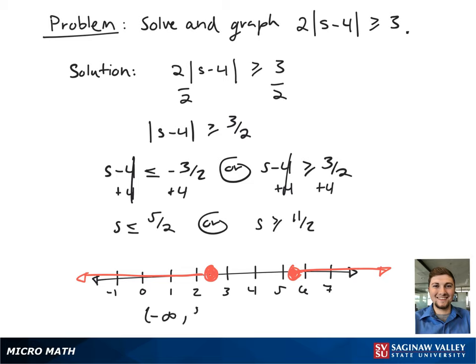In interval notation, this looks like an open bracket from negative infinity to 5 halves with a closed bracket, in union with an open bracket from 11 halves to infinity with a closed bracket.